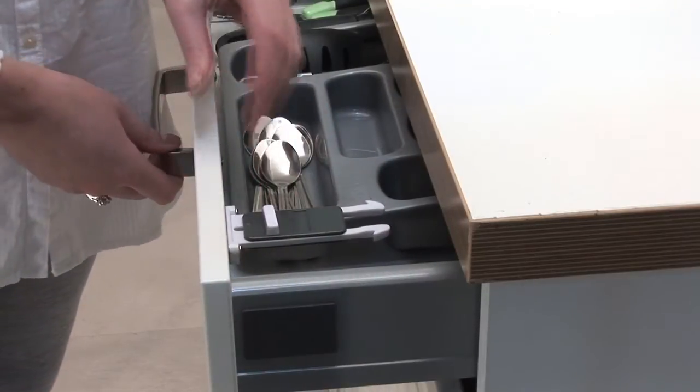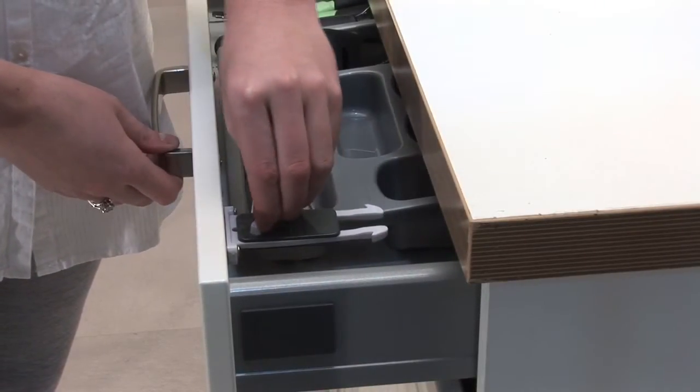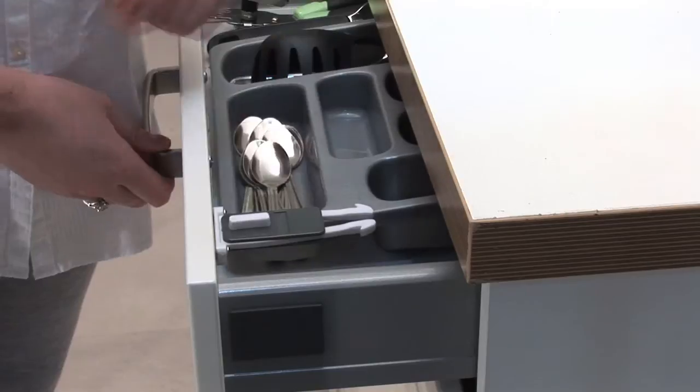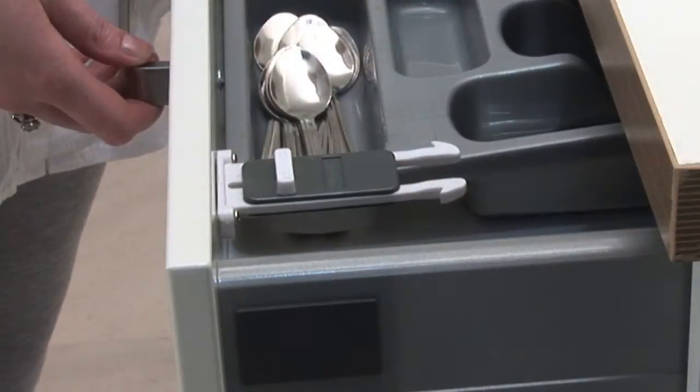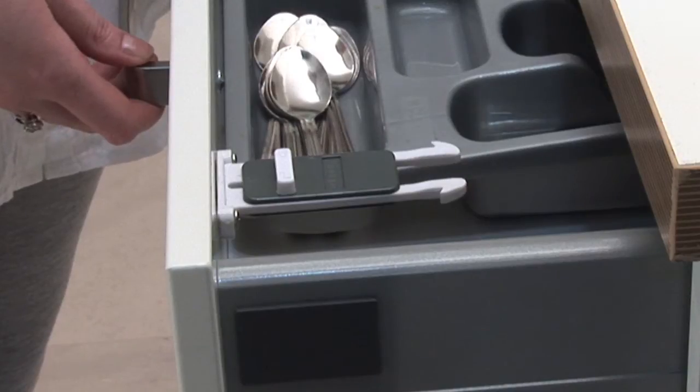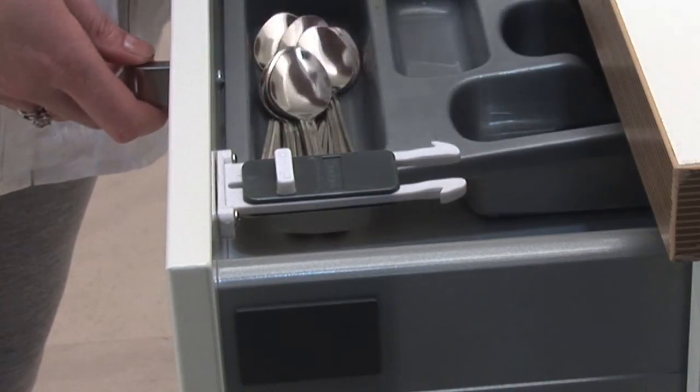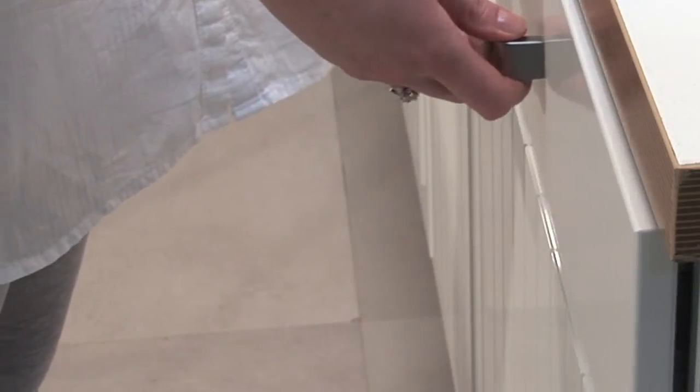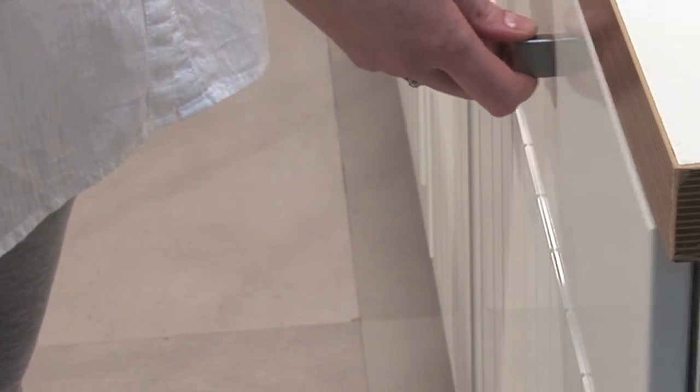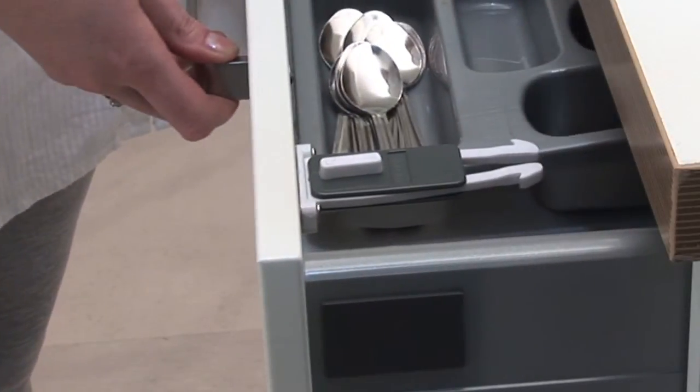The ExtraGuard dual locking draw latch can also be turned completely off, allowing full access for convenience when children aren't around. Simply turn the button clockwise, ensuring that the open padlock is facing down towards the front of the drawer. The latch is now disengaged and access is unrestricted.